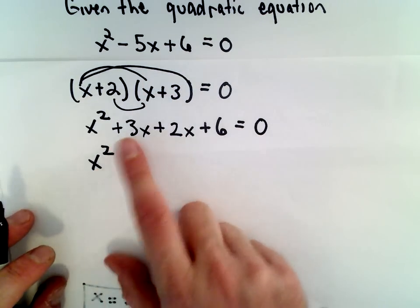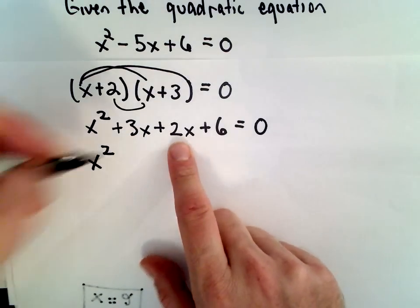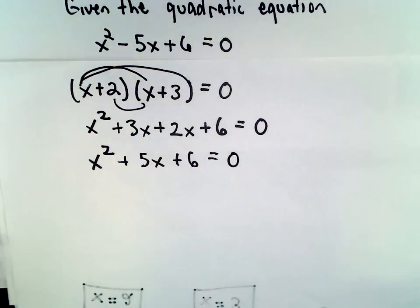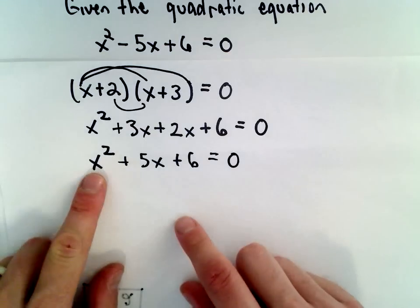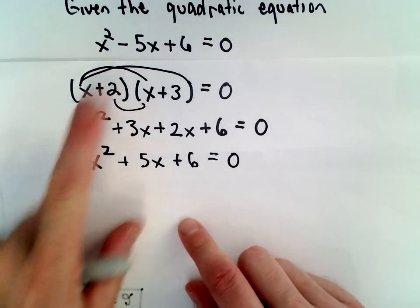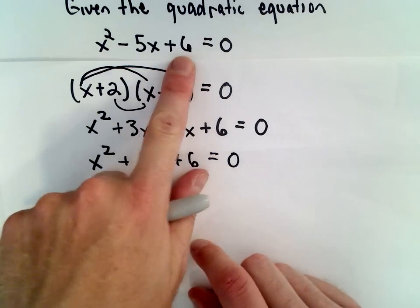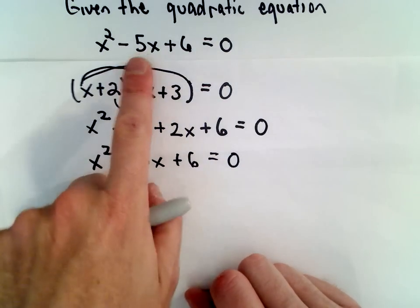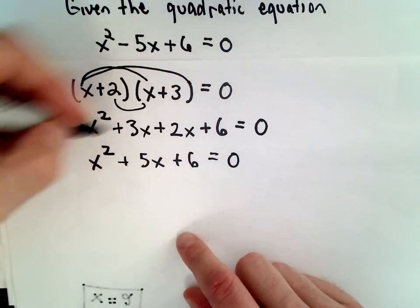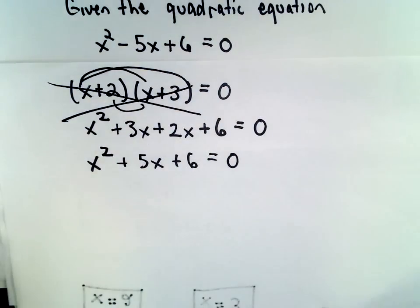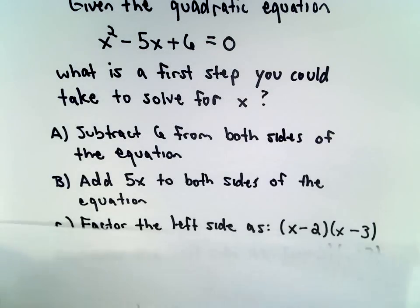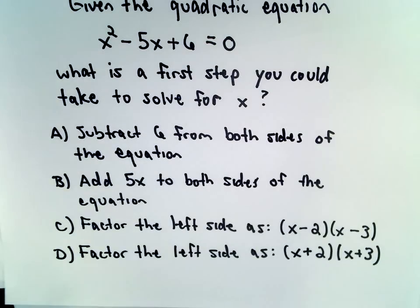But notice that doesn't give us the original quadratic equation. We would have x squared. Our plus 3x and plus 2x, that's going to give us plus 5x. So notice we actually factored it incorrectly. We got the x squared like we should have. We have the positive 6 like we should have. But then we're getting this positive 5x instead of the negative 5x. So this is actually not a correct factorization at all. It definitely looks like the solution choice C is the correct answer here.